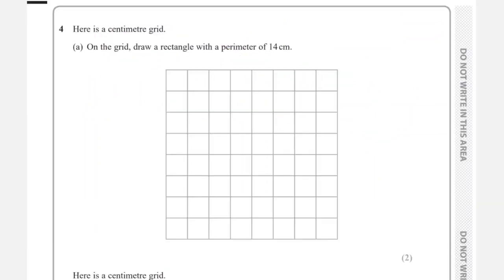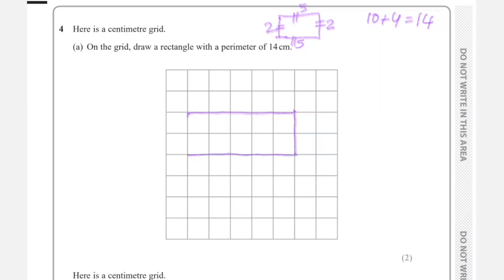On a centimeter grid, draw a rectangle with a perimeter of 14 cm. Perimeter means the sum of all sides. In a rectangle, opposite sides are equal, so if the length is 5 and the width is 2: (5+5) + (2+2) = 10 + 4 = 14. So draw a rectangle 5 cm by 2 cm on the grid.